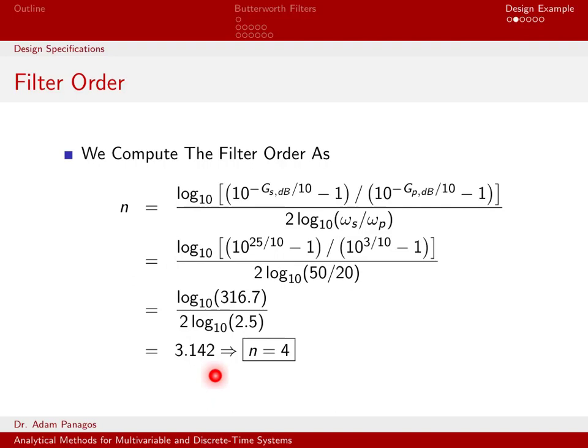Now n is the order of the filter, and it has to be an integer. So we can't use the actual value 3.142. We have to round it to an integer. So typically, we always round up. If we round up, we're going to have a filter that has better specifications and a better roll off than if we had rounded down. So from 3.14, I'm going to round that up to four. So at this point, we have decided that we need a fourth order filter if we want to be able to meet these design specifications.